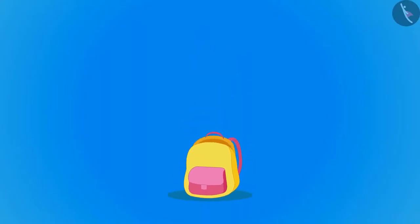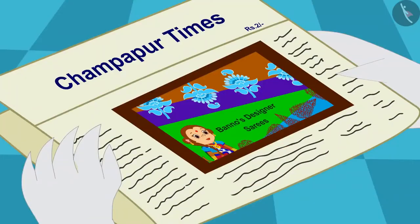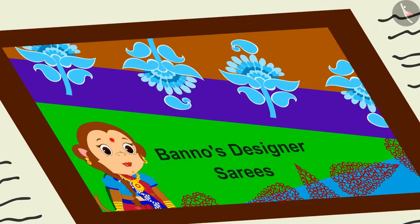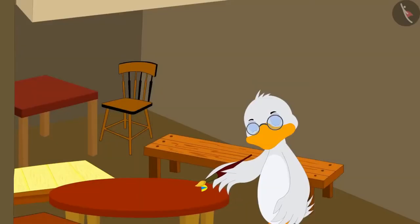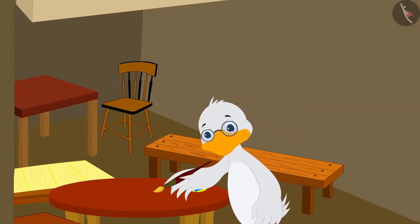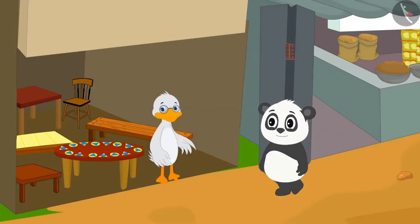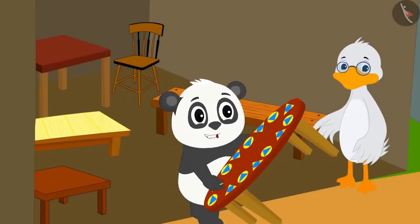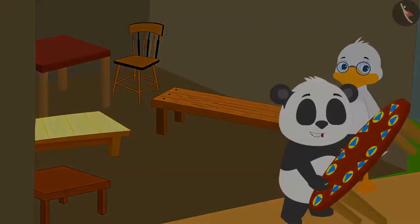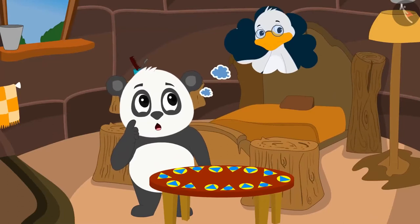Hello, children. In this video we will learn about patterns with geometric shapes. Seeing the pattern of Banno's sarees becoming famous, Uncle thought, why not make a pattern on his desk too? Uncle created such a pattern using geometric shapes on his round table. Golu came to buy the table at Uncle's shop and he liked it very much. Golu immediately bought the table. Golu returns to his house thinking, how did Uncle make this pattern? I don't know the rules for it.